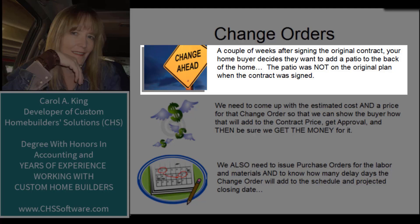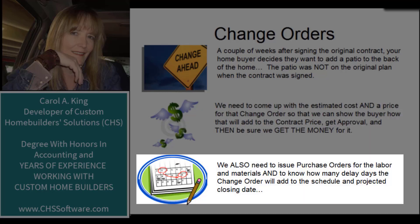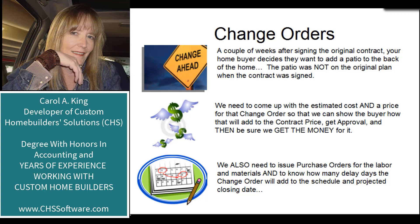A couple weeks later, after setting a contract price and getting the contract signed, our home buyers have suddenly decided they want to add a 400 square foot patio off the family room — not on the original plans and not included in the agreed-upon contract price. We need to estimate the cost for that patio, set a price for the change order, show the buyers how it adds to the contract price, collect the money, issue purchase orders for extra labor and materials, and determine how many days it will add to the schedule and projected closing date.